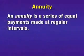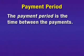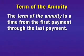Let's begin by defining the terms. An annuity is a series of equal payments made at regular intervals. The payment period is the time between the payments. The term of the annuity is the time from the first payment through the last payment.